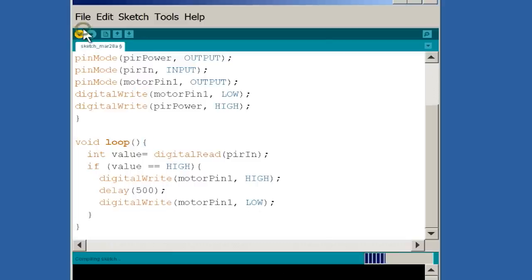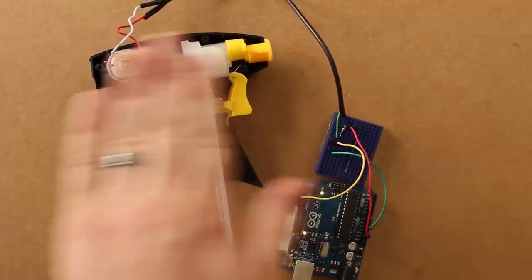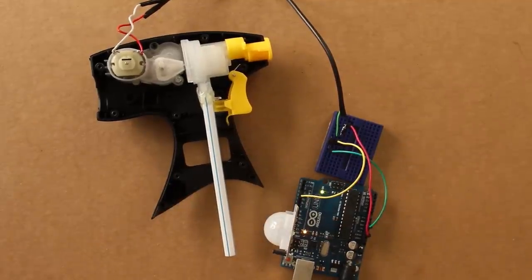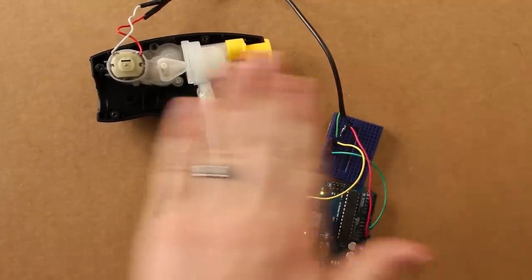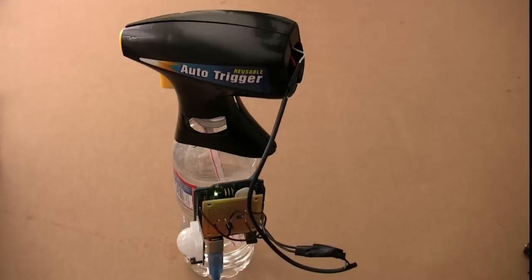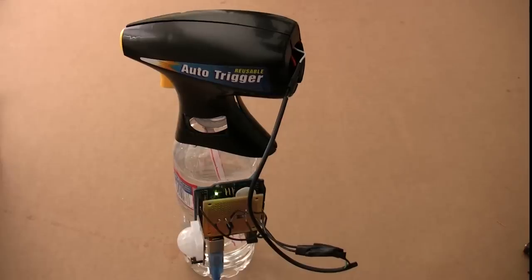Alright now verify it and upload it to your Arduino. If it's successful, whenever you move in front of the motion sensor, it should activate the auto trigger. Now just stick the straw in a cup of water, being careful not to let any of the electronics get wet, and then power up the Arduino.